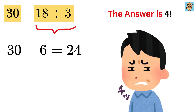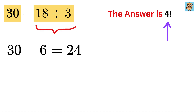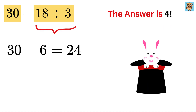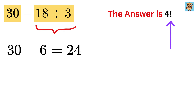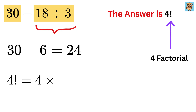Now you might think that this gives us a completely different result. The answer was supposed to be 4. This is where the trick lies. Can you see the exclamation mark after 4? This is not just 4, but 4 factorial, which is an operation in math where you multiply 4 by all the whole numbers less than it, down to 1. So 4 factorial means 4 times 3 times 2 times 1, which is nothing but 24 itself.